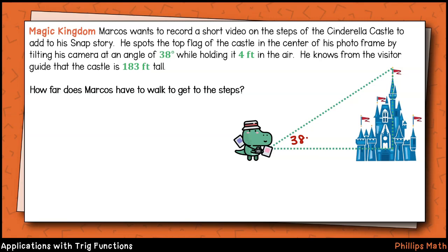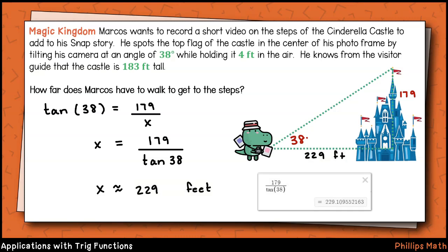So we'll label the height of the triangle in the figure 179 feet. We're solving for the side adjacent to this acute base angle, so we'll use tangent, which relates the opposite and the adjacent sides. We'll set this up as tangent of 38 degrees equals 179 over x. Again, we multiply both sides of the equation by x and divide both sides by tangent of 38 degrees. We have x equals 179 over tangent of 38 degrees, so that's about 229 feet.